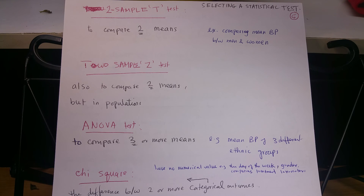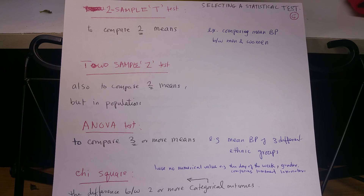Hello everybody. This is the fifth video in Behavioral Sciences, Epidemiology and Statistics for USMLE. We'll talk briefly now about how to select a statistical test. They might ask you in a question what type of test would you choose for this type of question.